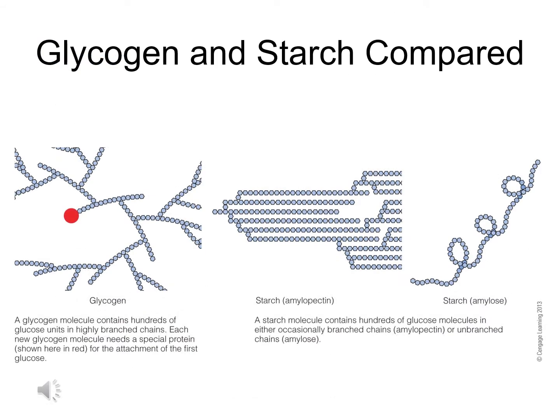Looking at this slide, we can see an example of a glycogen molecule compared to molecules of starch. The glycogen molecule has hundreds of glucose units linked together in a very highly branched chain configuration, which allows it to be hydrolyzed very quickly. Also note that each new glycogen molecule needs a special protein to be present before glucose units can be attached. Starch, on the other hand, doesn't need any special protein to start the chain. Starch can be very compact or form long chains, with or without branching, depending on the type of plant it comes from.